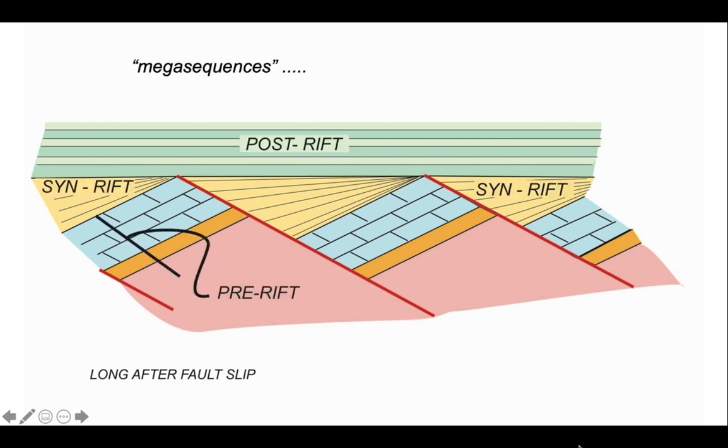These successions we call megasequences. We have a pre-rift megasequence which was deposited before any faulting, a post-rift megasequence deposited after all the faulting, and in between a package of rocks deposited during faulting called synrift.